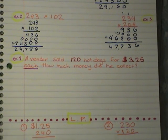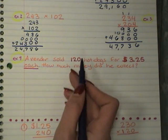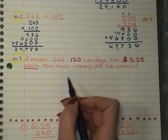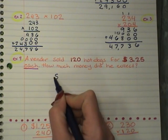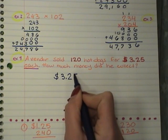Alright, this is our last example before you go on to your lesson practice. And it says, a vendor sold 120 hot dogs for $3.25 each. How much money did he collect? Okay, so we sold 120 hot dogs, and they each are $3.25. So I'm going to set up my problem. I'm going to offset my 0.